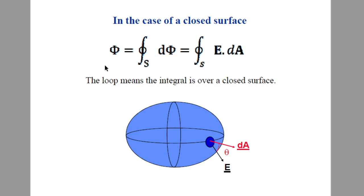The total flux associated with a closed surface is equal to the closed surface integral E · dA. The circle symbol on the integral represents a closed surface integral, and S represents the surface integral. So total flux φ = ∮ E · dA is the flux passing through a closed surface.